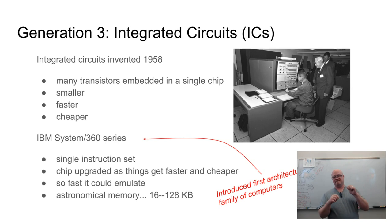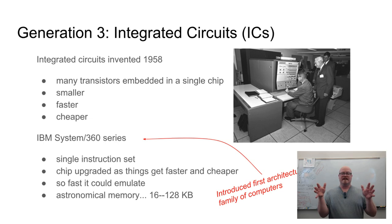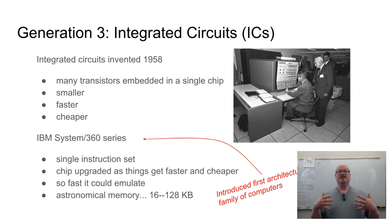Machines became fundamentally smaller as a side effect of integrated circuits. Rather than wiring individual transistors to boards, mechanically produced integrated circuits packed far more transistors into the same physical space. This dramatically shrinks the total size of an equivalent computer, decreasing the distance between components and thus increasing the speed of calculations. Because integrated circuits are produced mechanically, manufacturing costs drop dramatically — so machines are simultaneously smaller, faster, and cheaper.